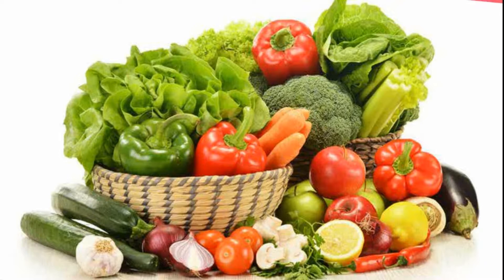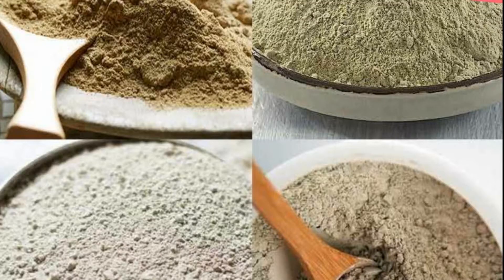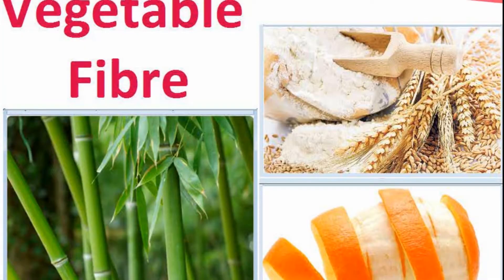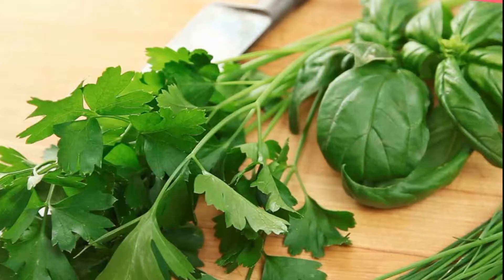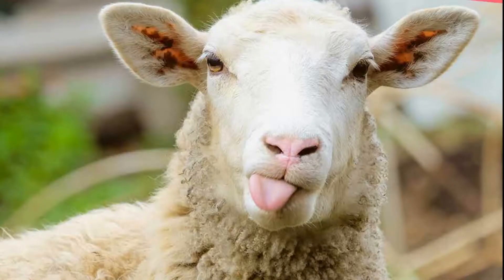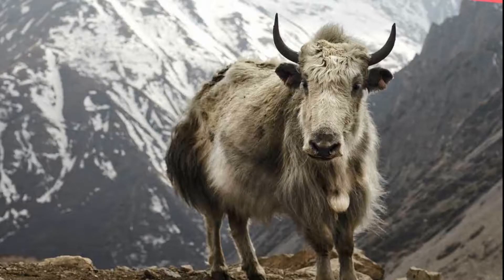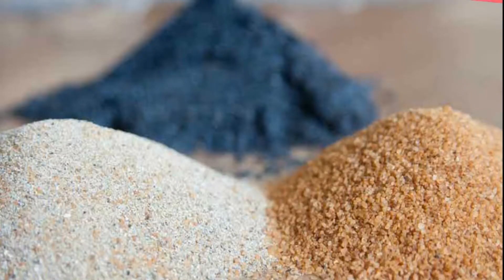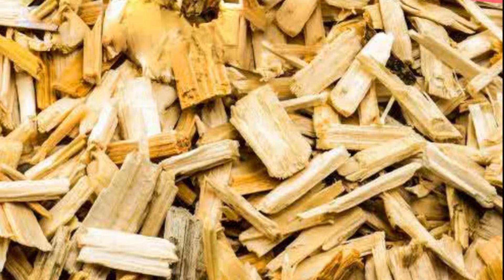Fibre is a material with hair-like structure produced from vegetables, animals, minerals and chemicals. Vegetable fibres are obtained from seeds, stems, leaves and fruit cases. Animal fibres are obtained from insects such as silkworms, from animals such as camels, sheep, goats, yak, etc. Mineral fibres such as glass are made from silica sand. Synthetic fibres are derived from chemical treatment of natural cellulose, which is made from wood pulp.